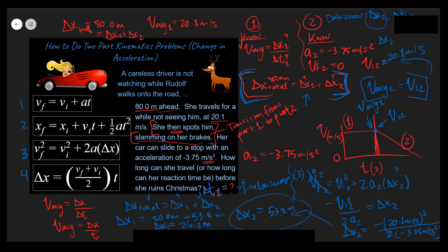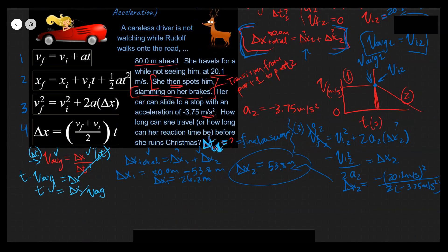Now we're looking for delta t1 — how long she can not pay attention to Rudolph. Using the average velocity equation, time equals delta x divided by V average. Time for Part 1 equals 26.2 meters divided by 20.1 meters per second, which equals 1.30 seconds. That is how long she can wait before she has to hit the brakes and not ruin Christmas.